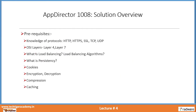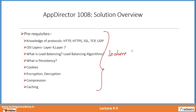These are some prerequisites which are important for any candidate continuing to learn Radware. That includes knowledge in different protocols, knowledge in OSI layers, knowledge in load balancing concepts, knowledge in persistency, cookies, encryption, decryption, compression and caching. If you really want to refresh yourself, I would suggest you go through lecture number 2 of this video series.